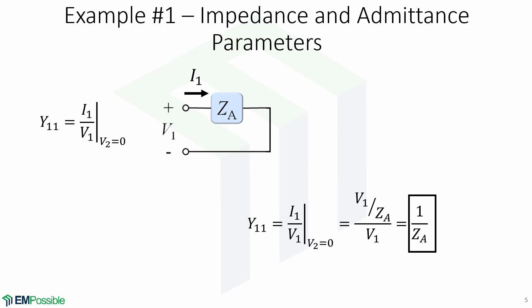This is a two-port network. We will first find Y11, which means finding the ratio of I1 to V1 when voltage V2 is turned off. This means that we are shorting the second port, leaving us with only V1 and I1. The current I1 is expressed as V1 over ZA. So I1 over V1 equals V1 over ZA divided by V1, leading to Y11 being equal to 1 over ZA.